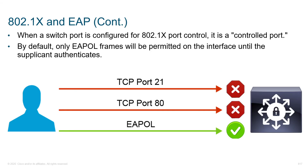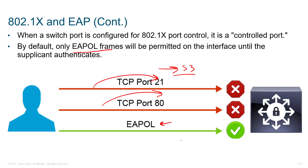With 802.1X and EAP, when a switch port is configured for 802.1X port control, it's configured as a controlled port. Your default state is unauthorized — in order for traffic to be passed, you have to authenticate. By default, only EAP over LAN frames are going to be forwarded. When we try to connect for FTP, port 80, DNS lookups — they say no. You don't even have an IP address yet; you can't do those things. The first thing you have to do is let us know who you are.